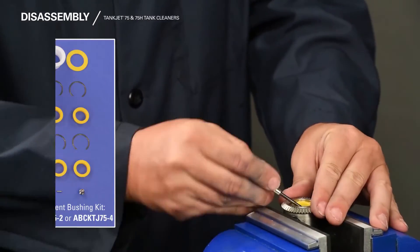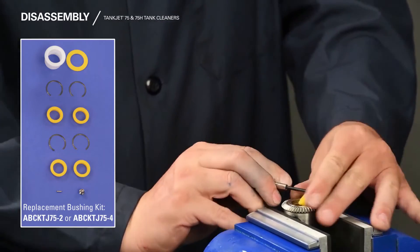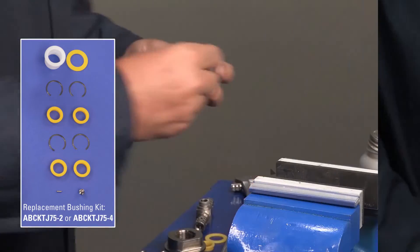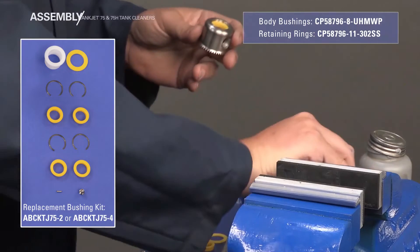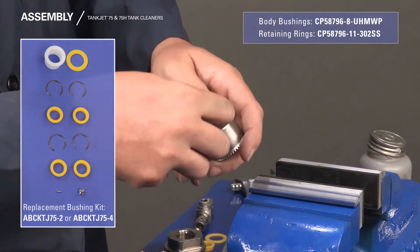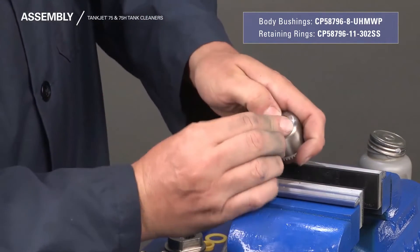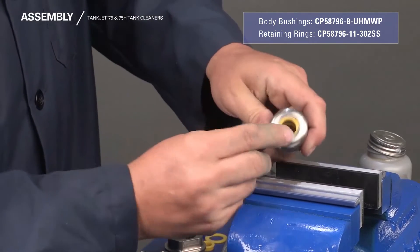Reassembly of the TankJet 75 is easy with the spare parts kit. Start by first installing the new nozzle body bushings into the nozzle body and secure them with snap rings. The snap rings should be seated in the groove.